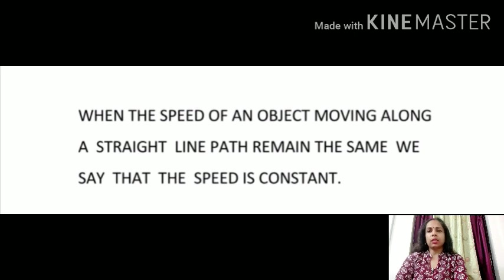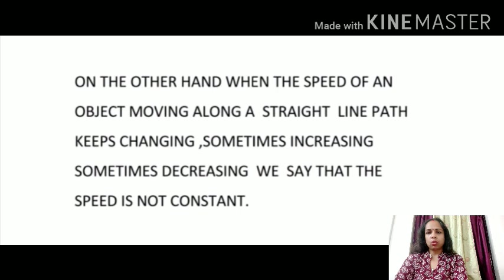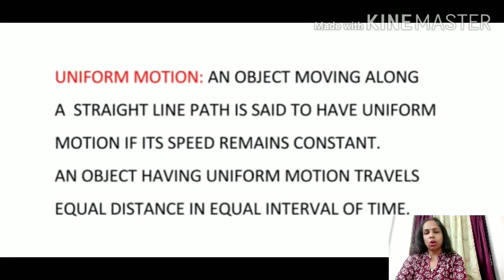Here we don't bother whether the car is moving with a constant speed or not during that hour. When the speed of an object moving along a straight line path remains the same, we say that the speed of the object is constant. On the other hand, if the speed of an object moving along a straight line path is changing — sometimes increasing, sometimes decreasing — then we say that the speed of the object is not constant. So, depending upon the nature of speed, a moving object can have either uniform motion or non-uniform motion.